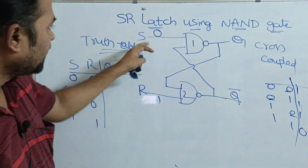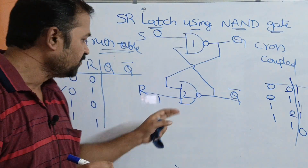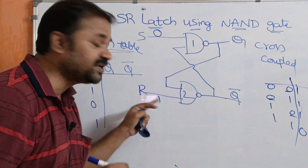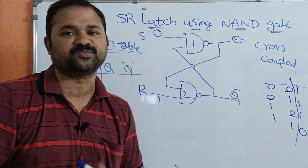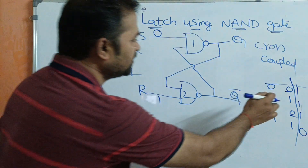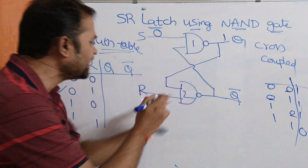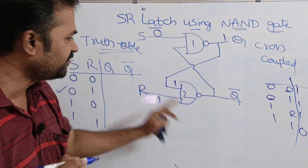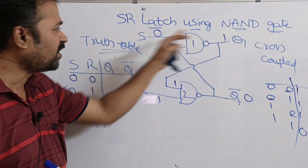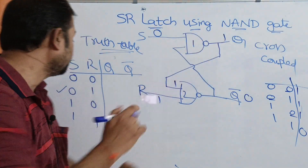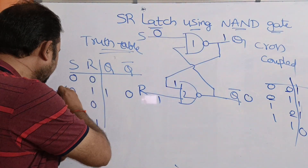So when S=0, R=1: the first NAND gate accepts 0, so its output is 1. This output (1) is passed to the second NAND gate, which already has R=1 as input. So the second NAND gate inputs are 1 and 1, giving output 0. Therefore, Q=1 and Q bar=0.